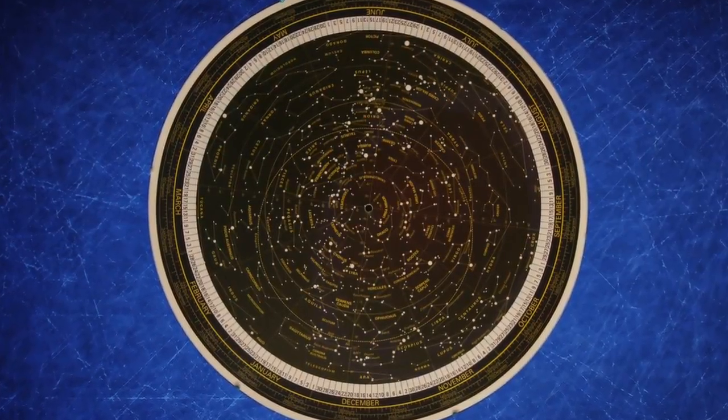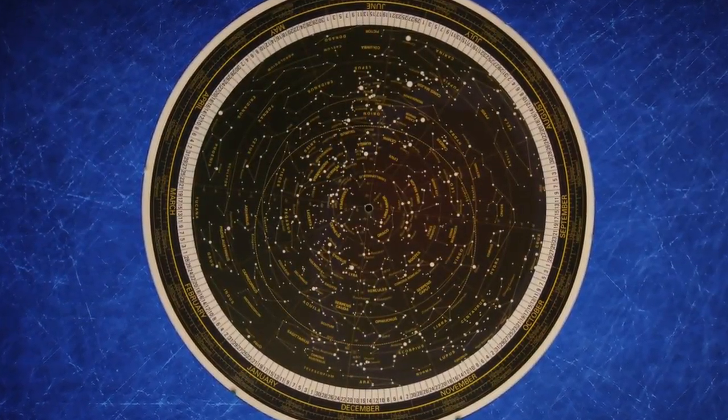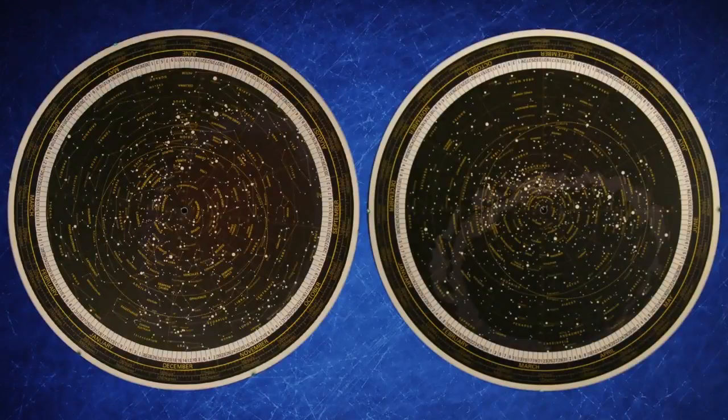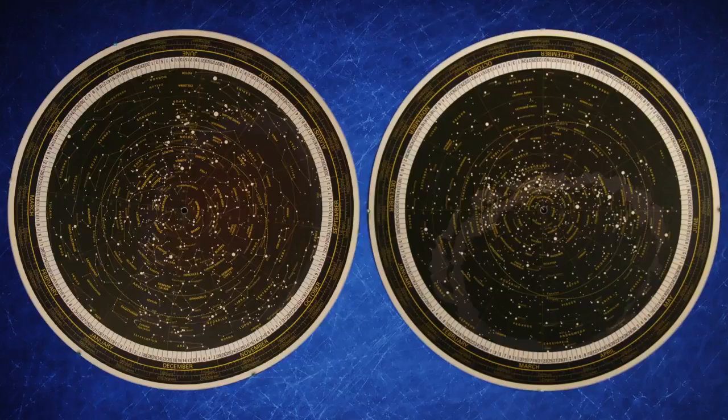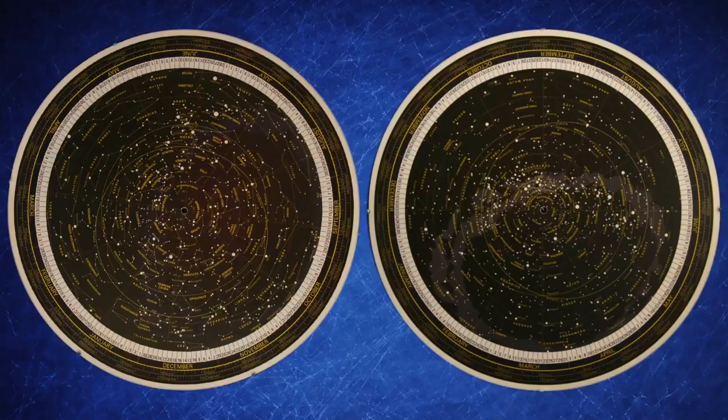So, in the same way that I busted open the Northern Hemisphere one, I did the same thing for the Southern Hemisphere. So, I've now got two sky maps. One for the Northern Hemisphere. One for the Southern Hemisphere. Showing me the whole sky as it's seen from different parts of the world.